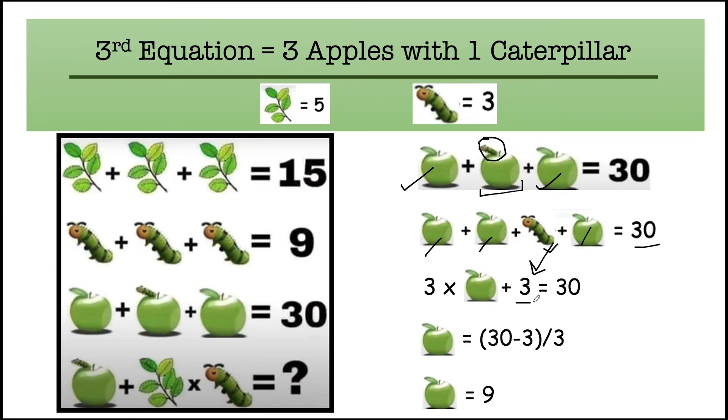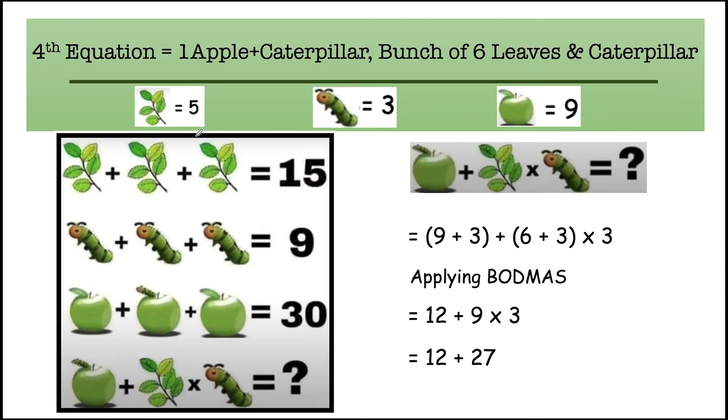Now putting the caterpillar's value as three, here we have to move this to the right side. So 30 minus 3 will be 27, and we have to divide it by 3 to find the value of one apple. So finally, one apple value equals nine.